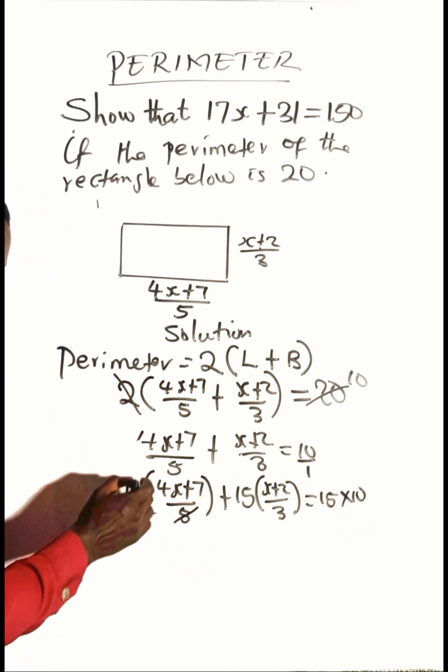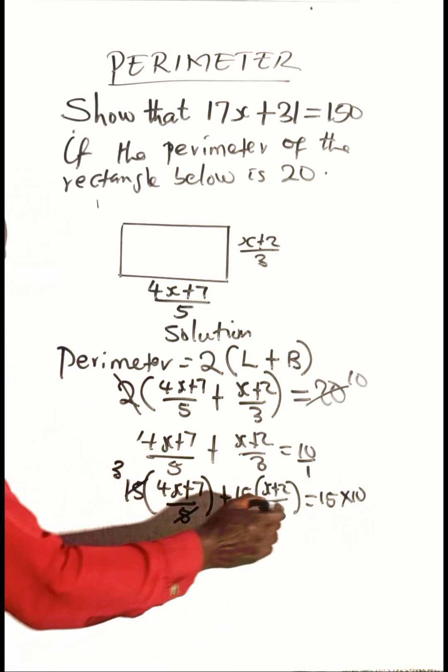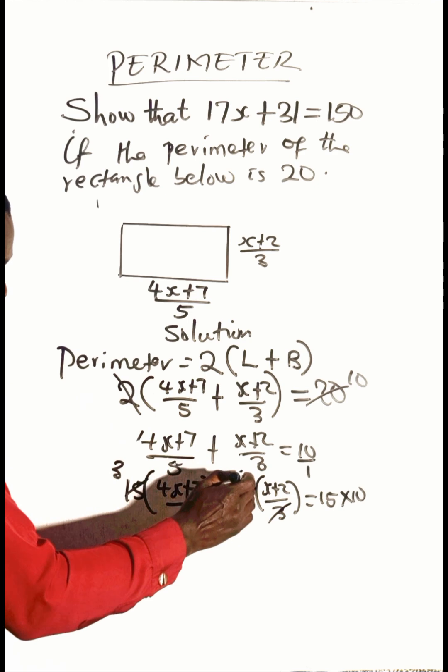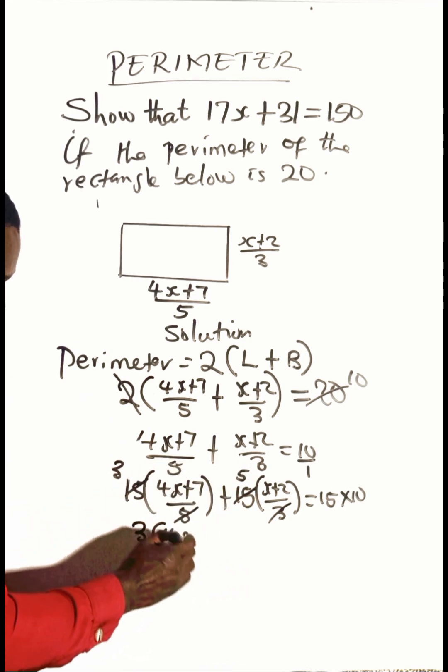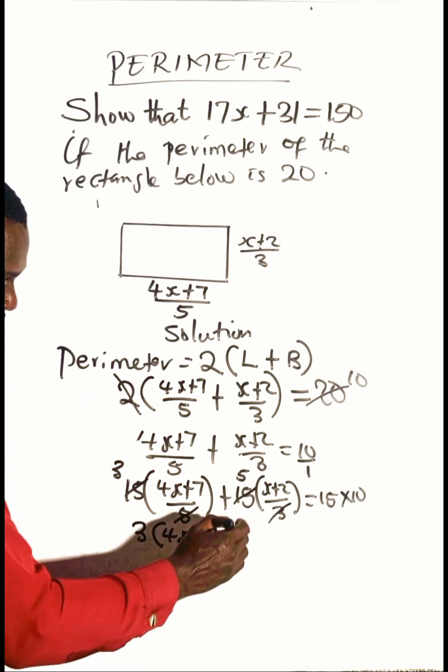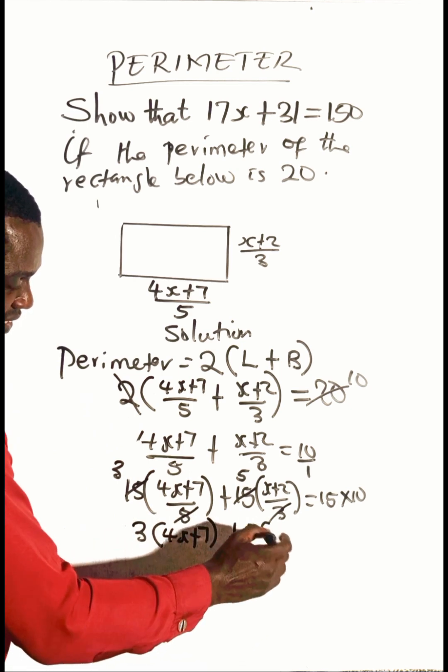If you divide this, you have 3 here, cancel this you have 5 here, and so we have 3 bracket 4x plus 7, then 5 brackets x plus 2.